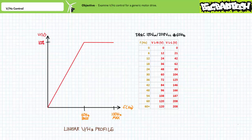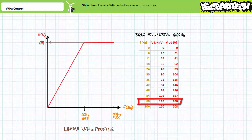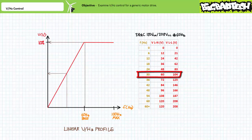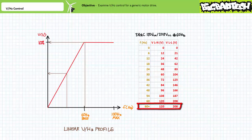A basic graph of volts per hertz control is typically linear from zero to the base frequency, although this isn't always the case and sometimes application-specific volts per hertz profiles exist. This basic linear volts per hertz profile applies zero volts at zero hertz and, assuming a 60 hertz base frequency, full voltage at 60 hertz. If one was to dial the excitation frequency down to half the base frequency or 30 hertz, applied voltage would also be proportionally reduced to 50 percent. Beyond the base frequency, motor drives typically flatline applied voltage at 100 percent up to the maximum frequency.